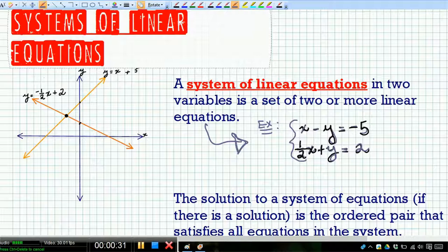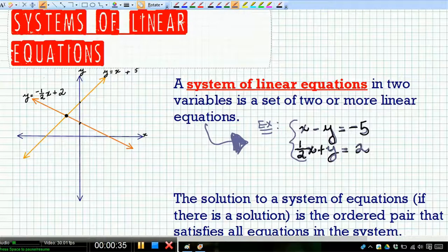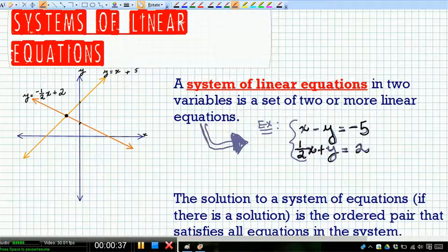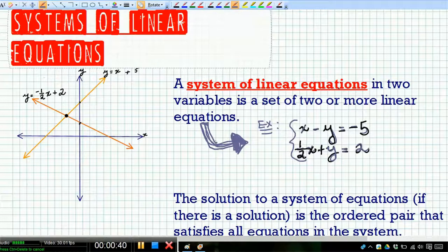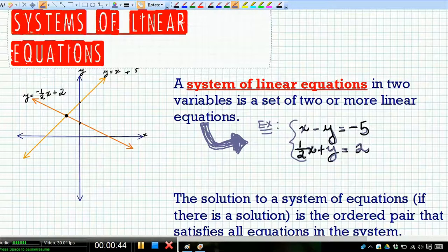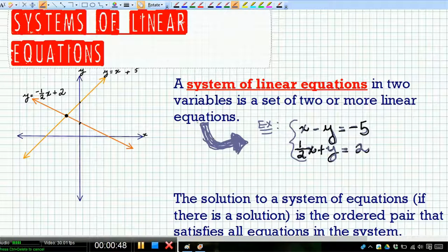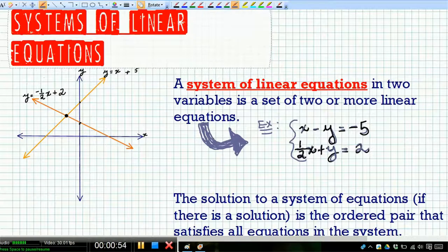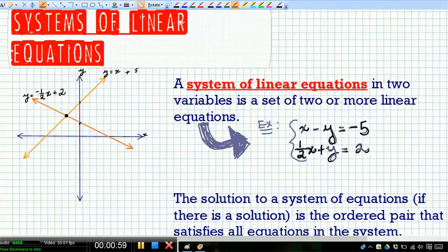You see the example here: X minus Y equals negative 5, and one half X plus Y equals 2. There's a set of linear equations grouped together for some purpose, and we'll see more of the purpose when we get into the word problem portion. What we're trying to look at first though, is what do these solutions look like?